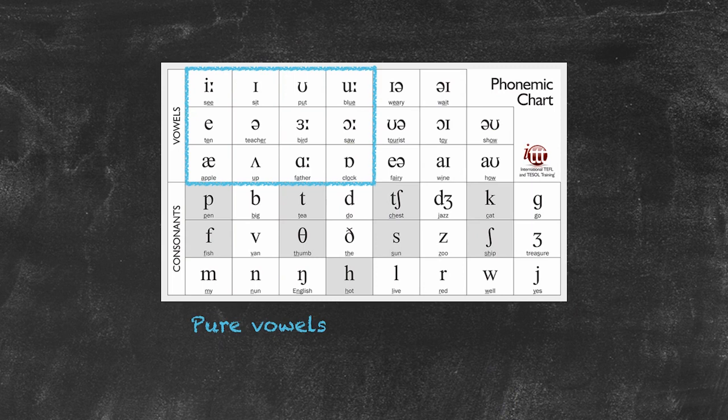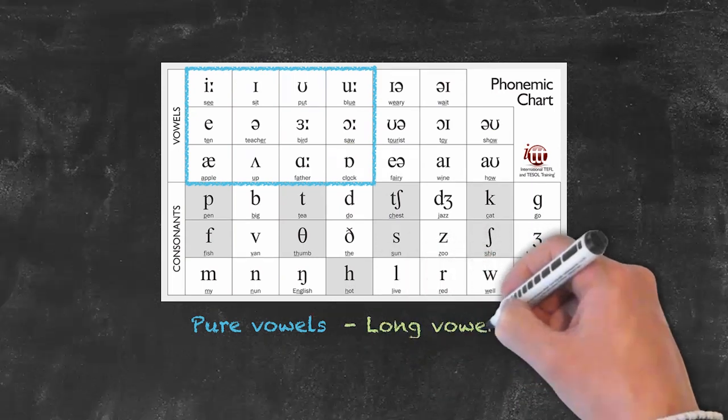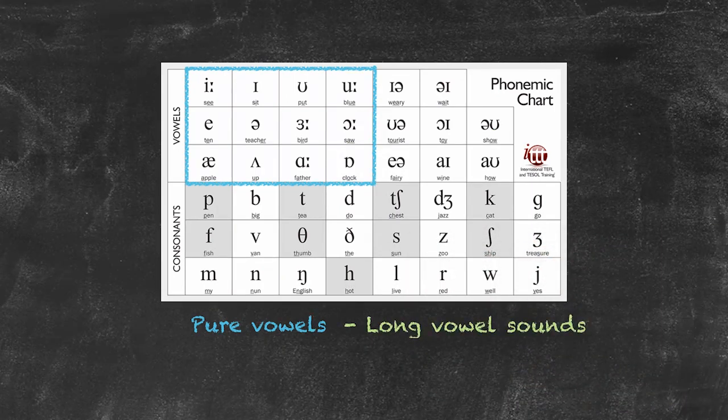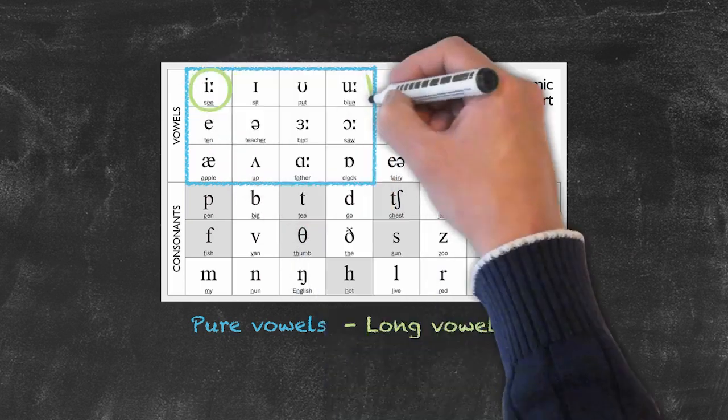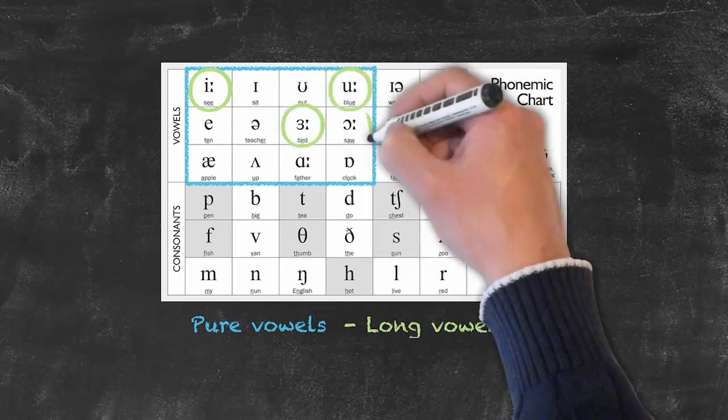Within the pure vowels we have what are called long vowel sounds. They tend to be said for a bit longer than the rest of the pure vowels, and we can tell our long vowels by the presence of a colon to the right of each phoneme.